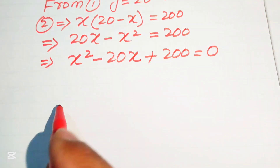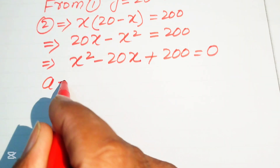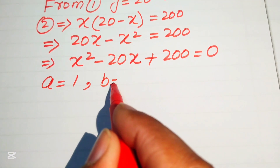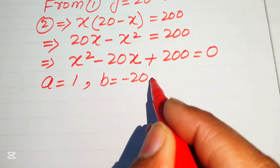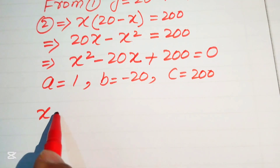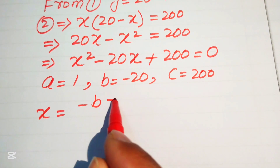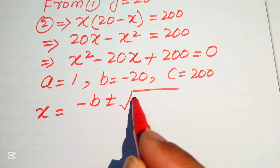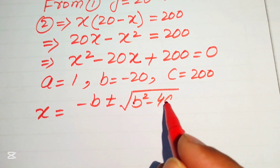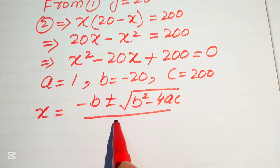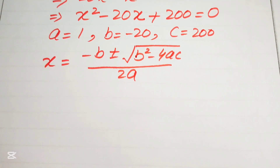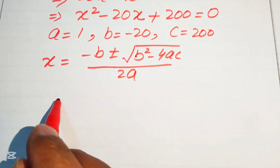In order to solve this equation we apply the quadratic formula. First we write the coefficients: a equals to 1, b equals to minus 20, and c equals to 200. The quadratic formula is stated as: x equals negative b plus or minus the square root of b squared minus 4ac, divided by 2a. Now we substitute the values of a, b, and c.